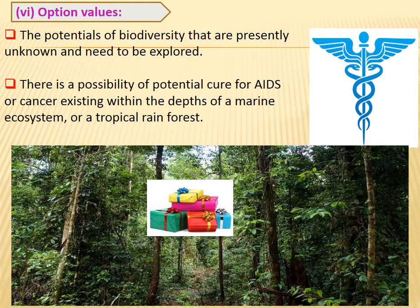The last one is the option value — an interesting value. We have two types of forests: open forest and closed forest. Open forest has been explored by human beings completely, and closed forest is yet to be explored, like the Amazon forest. People believe there is a strong gift given by God which may be a solution for dreaded diseases like AIDS and cancer, which we may get from the closed forest — gifts yet to be opened for the benefit of the human community.